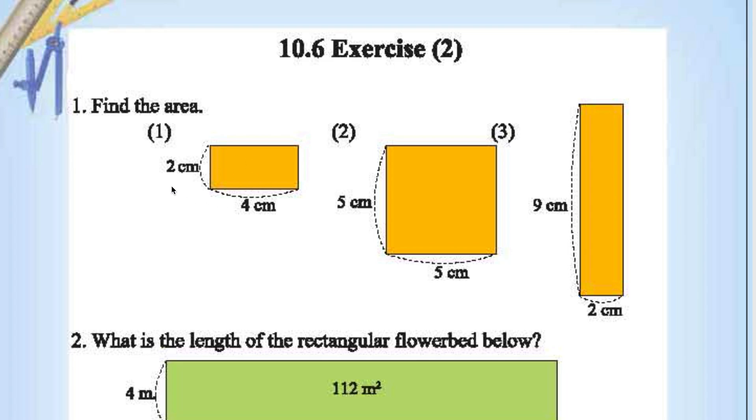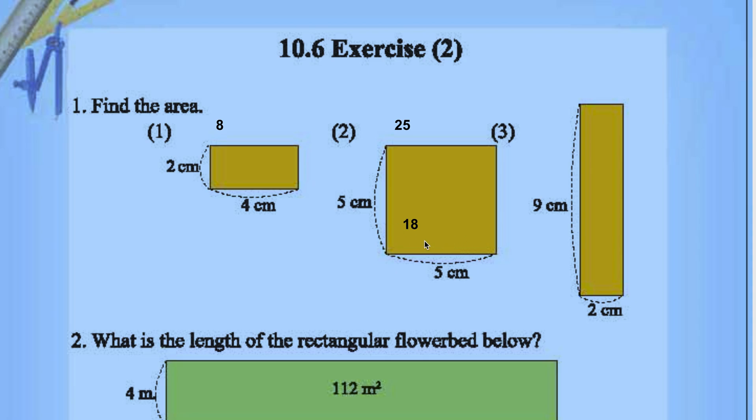2 into 4, 8 centimeter square is the area. 8 cm square or 8 square centimeter, first one. Second one, area of the square is 5 into 5, side square, that is 25 cm square. Third one, again rectangle, length into breadth, 9 into 2, 18, 18 cm square or square centimeters.